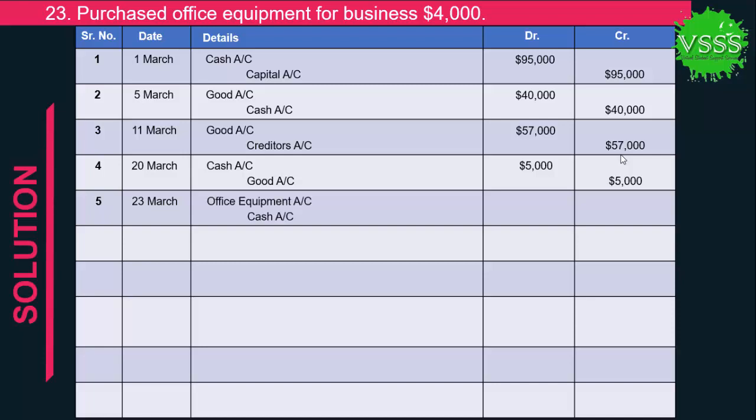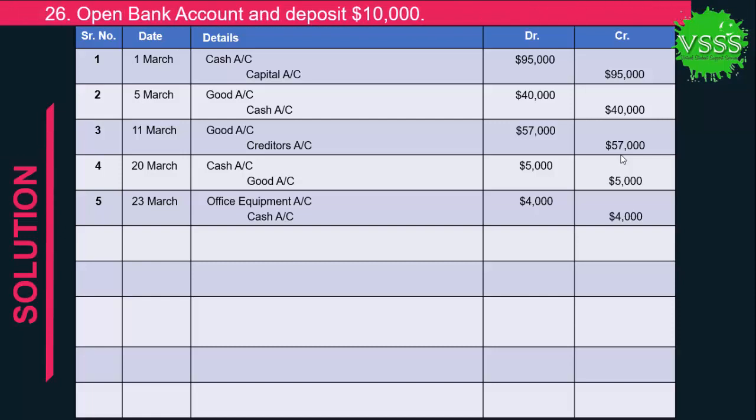Transaction 5: Purchased office equipment for business $4,000. Two accounts are affected: office equipment and cash. Office equipment is coming in and cash is going out. Office equipment is debited by $4,000 and cash is credited by $4,000.